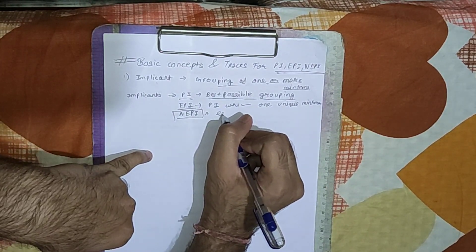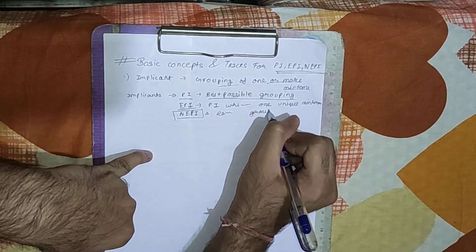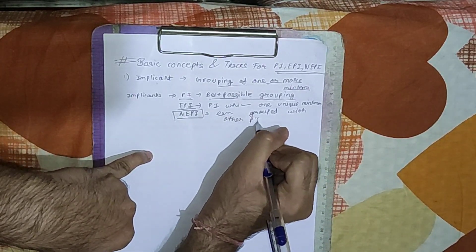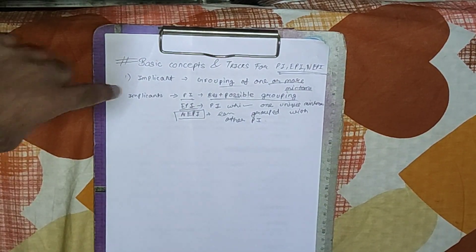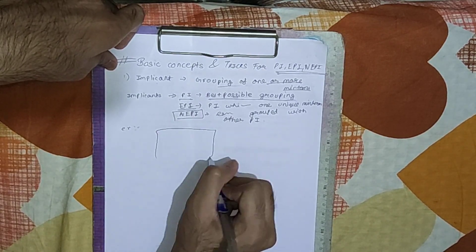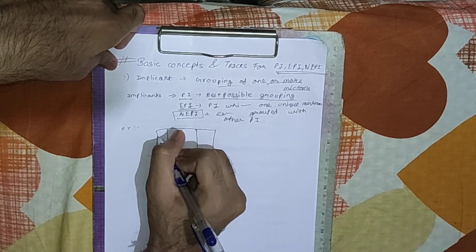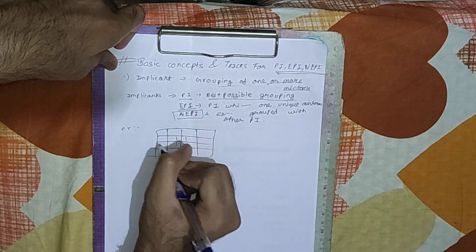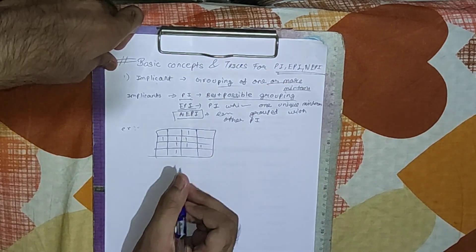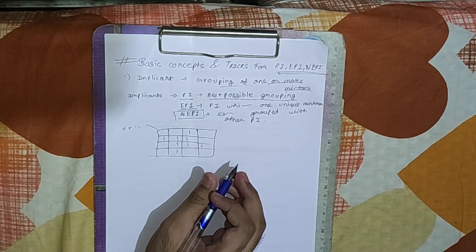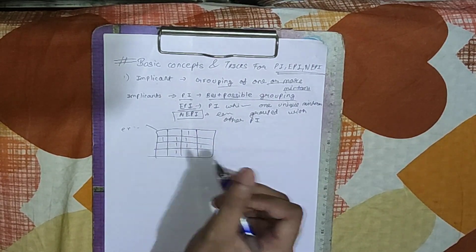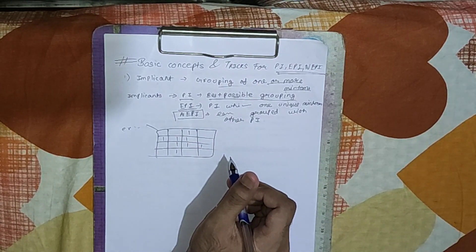Each element in a NEPI is grouped with other prime implicants. So let us see these concepts with some examples. Suppose I have this KMAP with the values: 1 1 1 1 1 1 1 1 1 1 1. If I want to do grouping here, with the concepts related to KMAP, first we should go by the maximum grouping.